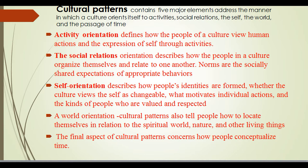The first element is activity orientation, which defines how the people of a culture view human actions and the expression of self through activities. The second is social relations orientation, which describes how people in a culture organize themselves and relate to one another. Self-orientation describes how people's identities are formed, whether their culture views the self as changeable, what motivates individual actions, and the kinds of people who are valued and respected. World-orientation tells people how to locate themselves in relation to the spiritual world, nature, and other living things.